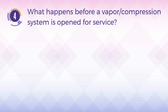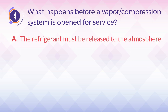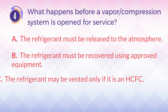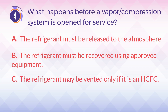Number 4. What happens before a vapor or compression system is open for service? A. The refrigerant must be released to the atmosphere. B. The refrigerant must be recovered using approved equipment. C. The refrigerant may be vented only if it is an HFC.